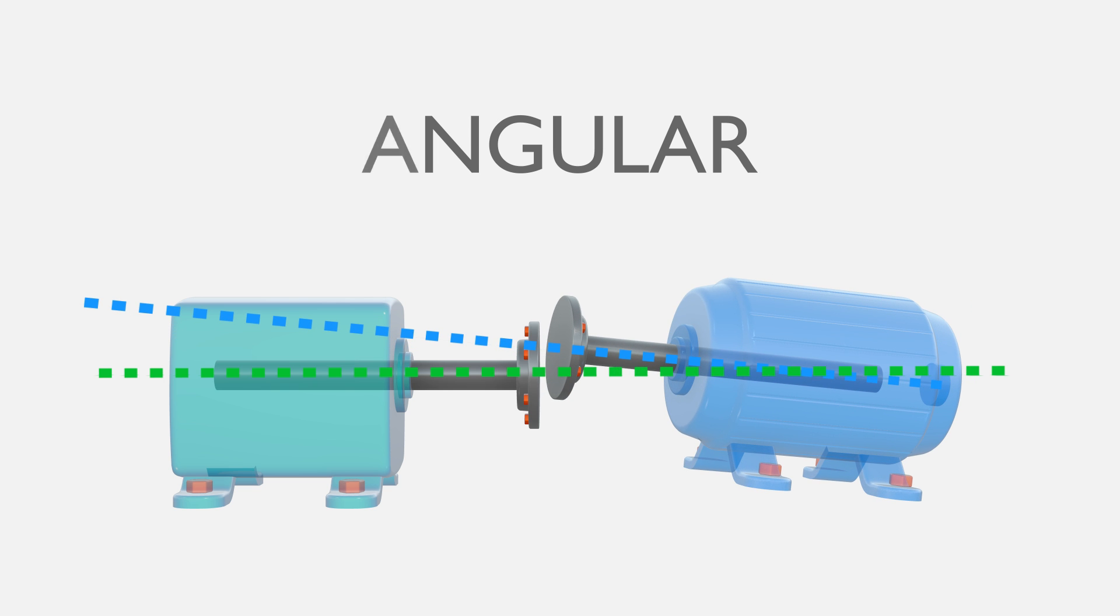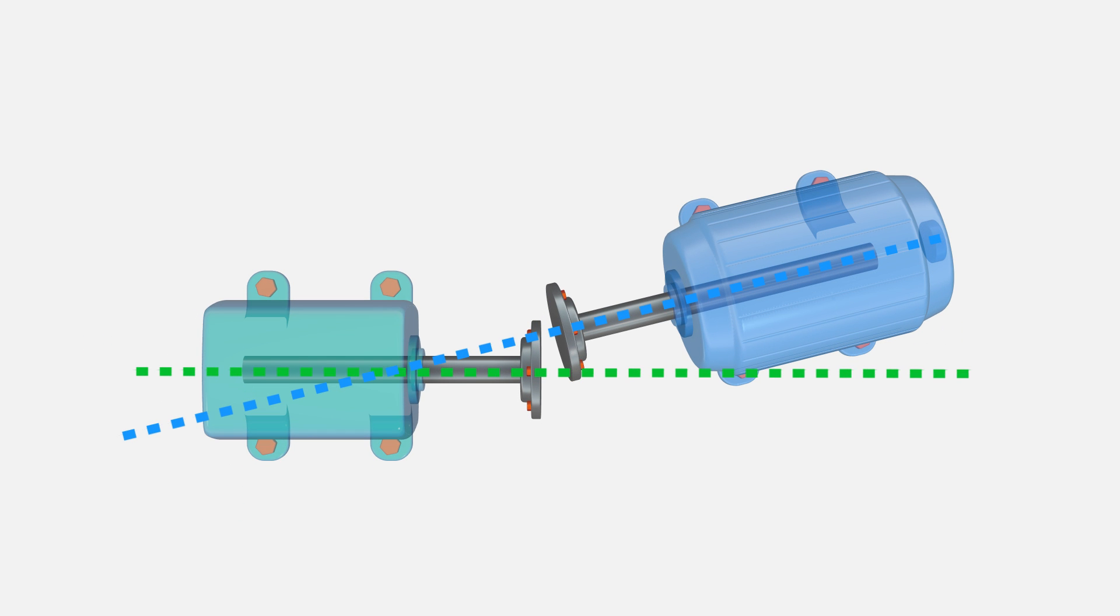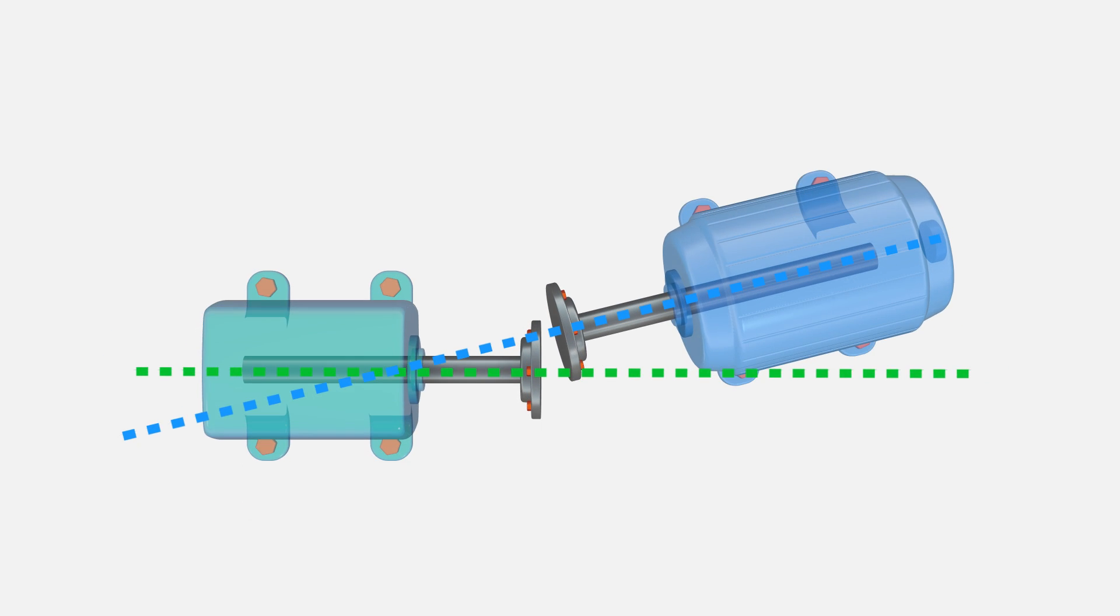What we usually see in the field is a combination of both offset and angular misalignment, occurring in three dimensions as you can see here as we rotate between the vertical plane and the horizontal plane.